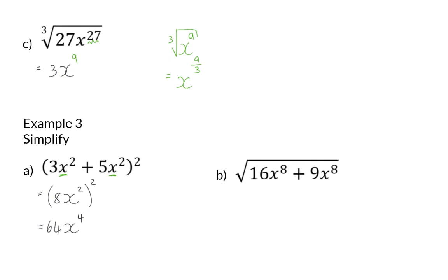In B we have two terms inside a square root, and this works similarly — we have two like terms and therefore we can add them up. When we add them up we get 25x to the power of 8, and now we can determine the square root. The square root of 25 is 5, and the square root of x to the power of 8 is x to the power of 4, because we divide the exponent by 2.